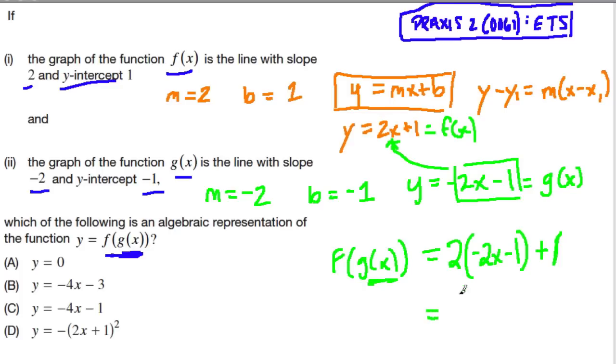So here we use the distributive property. 2 times negative 2x is negative 4x. 2 times negative 1 is minus 2 plus 1. We simplify this. So negative 2 plus 1 is negative 1, and f of g of x equals negative 4x minus 1.